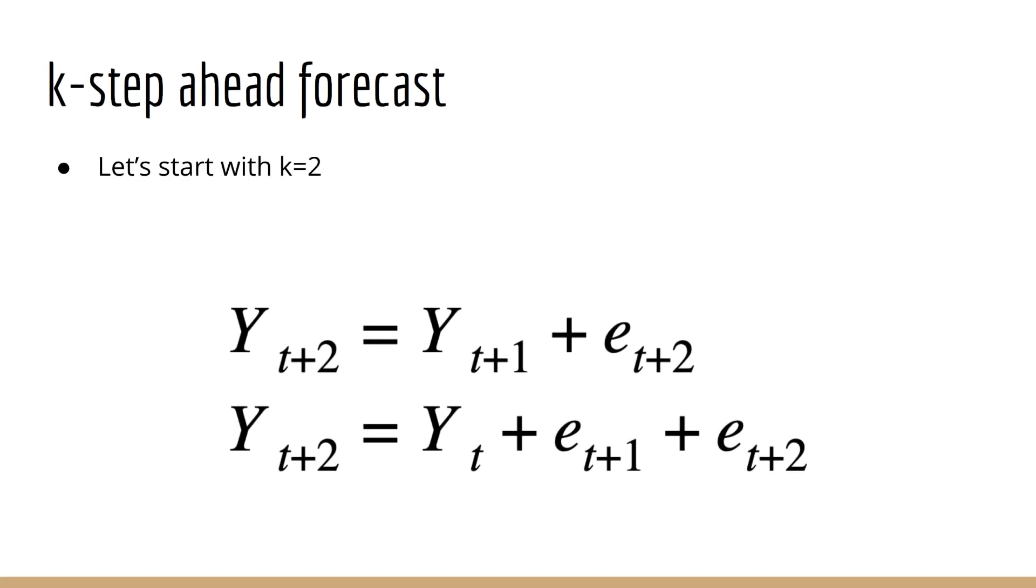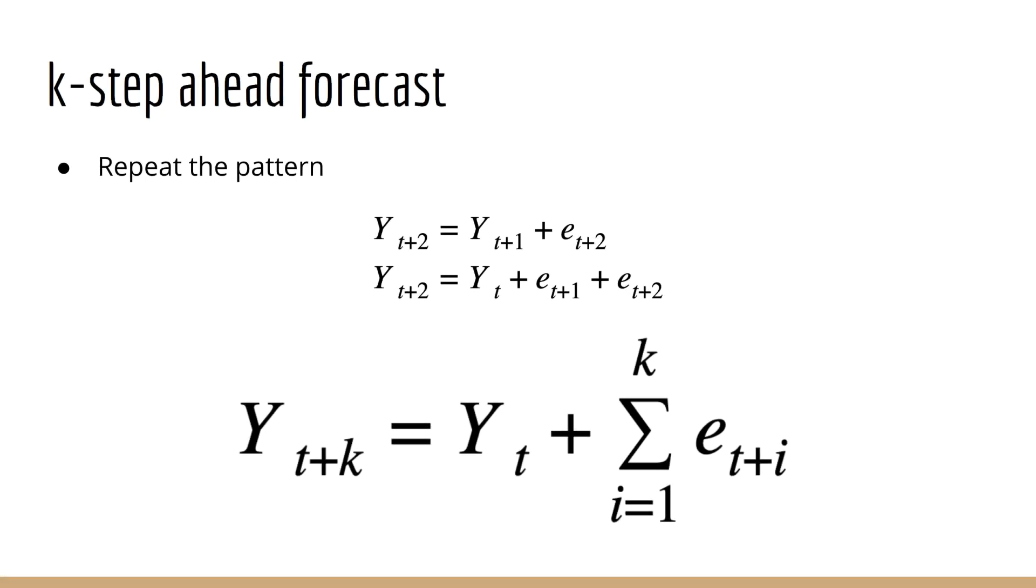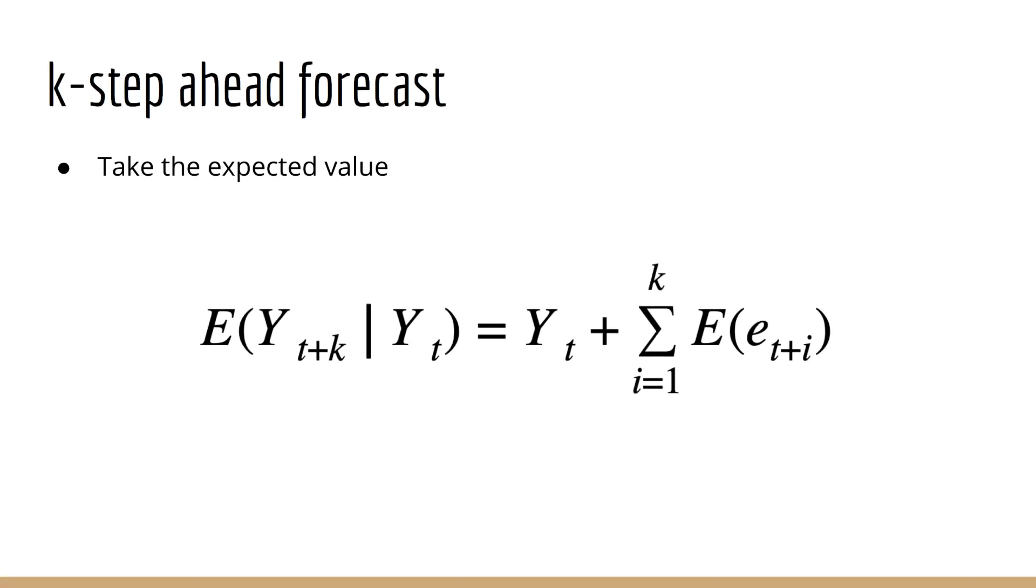What about if we wanted to forecast k steps ahead? Well, it helps to think recursively. What if we wanted to predict two steps ahead? We can write down this expression as Y(t+2) equals Y(t+1) plus e(t+2). But we know that Y(t+1) can be written down in terms of Y(t) since we just saw that. So our final expression is that Y(t+2) is equal to Y(t) plus e(t+1) plus e(t+2). Of course, we can just keep repeating this pattern up to k steps. What we end up with is that Y(t+k) is equal to Y(t) plus the sum of the error terms from time t+1 up to time t+k.